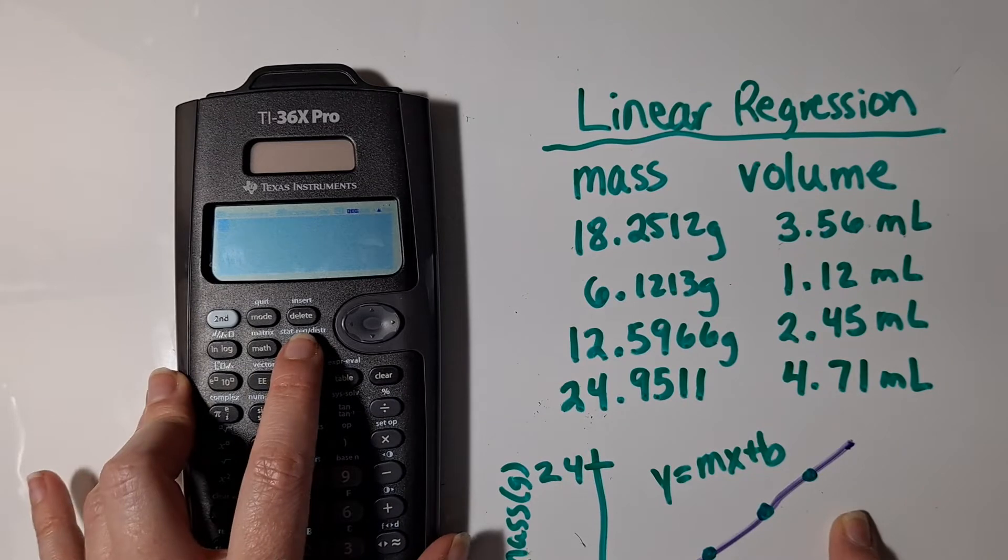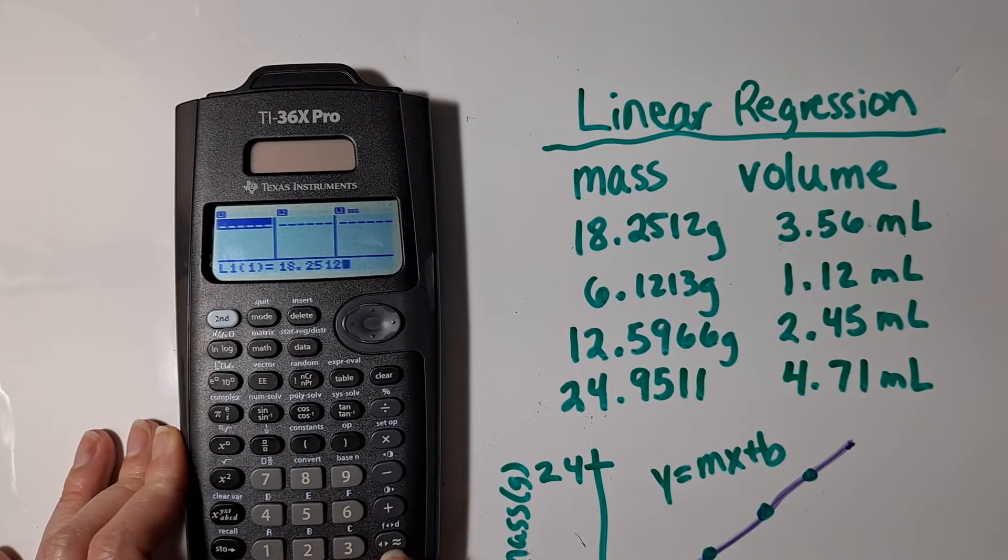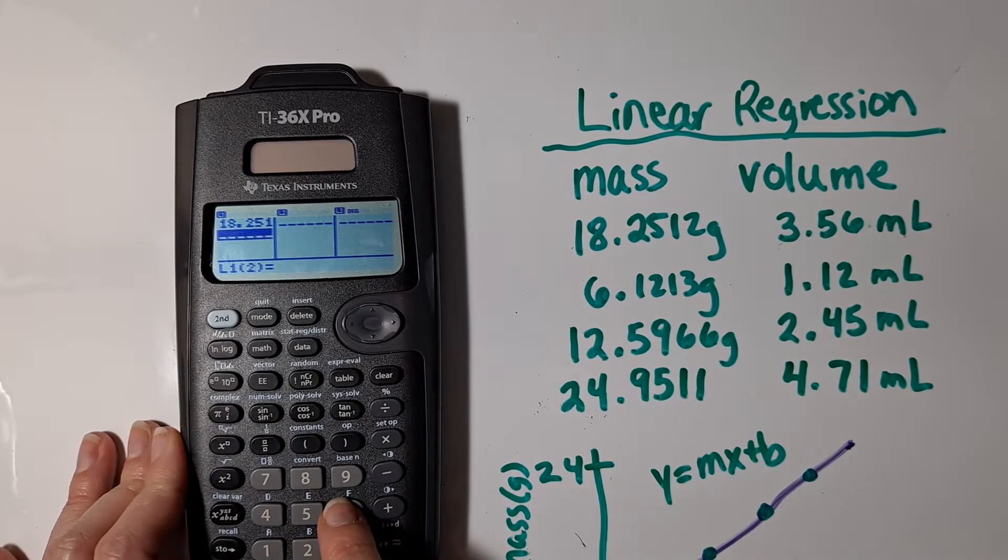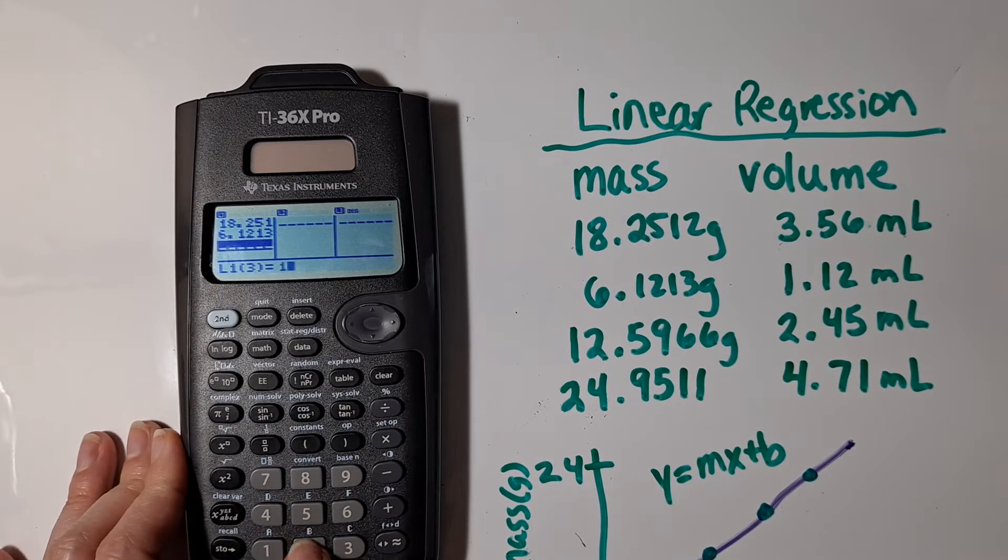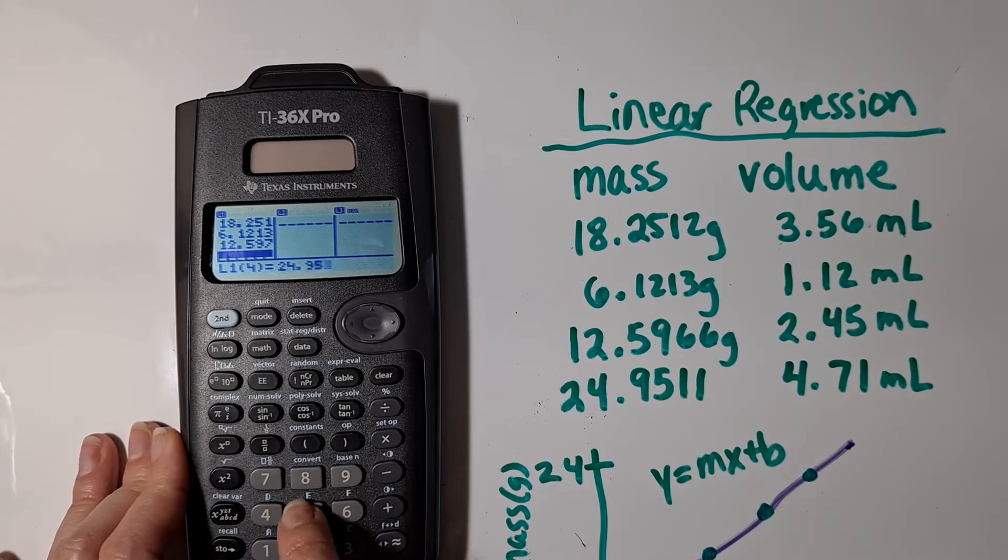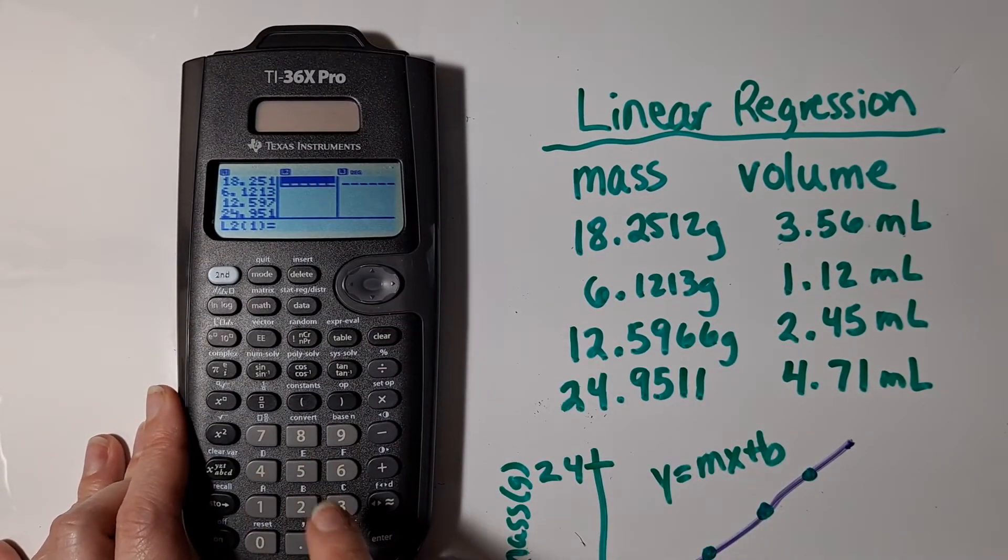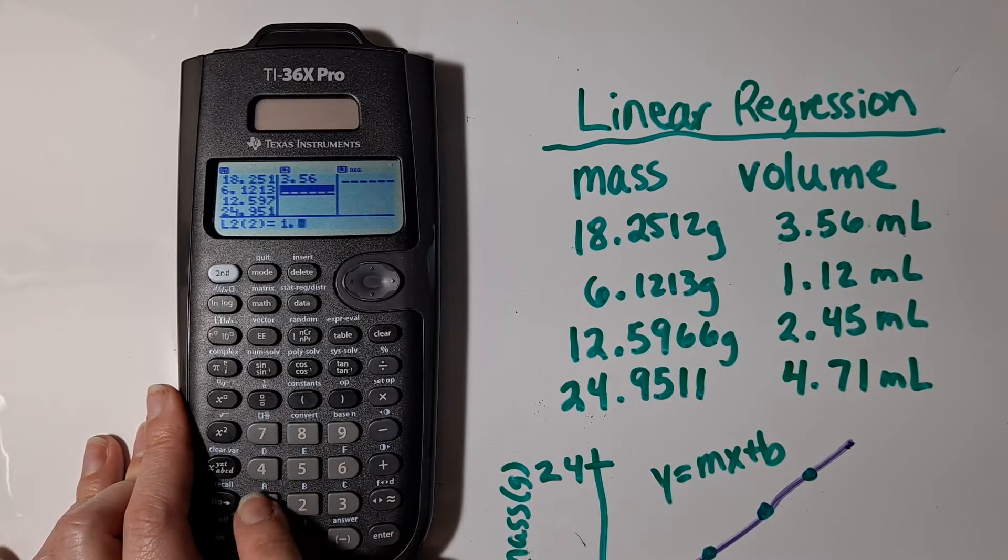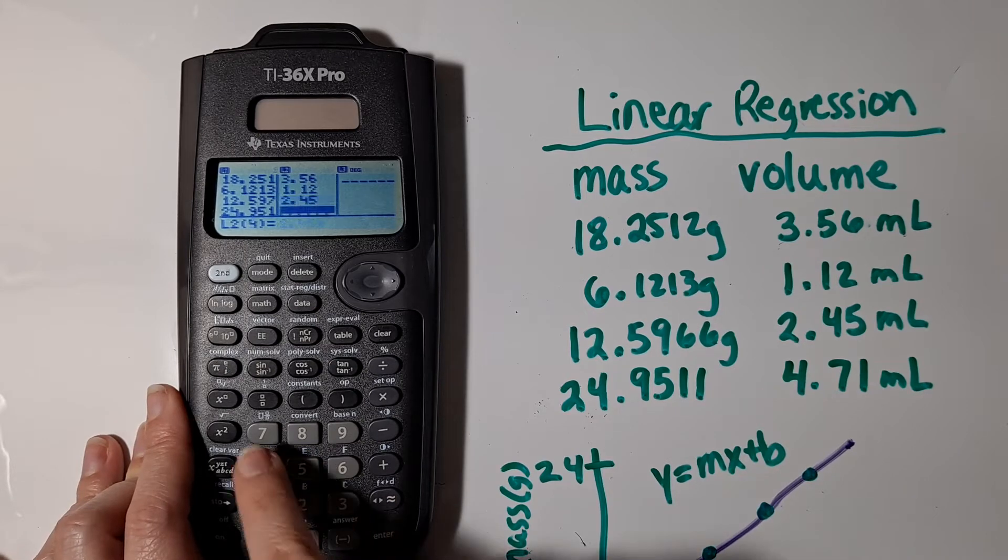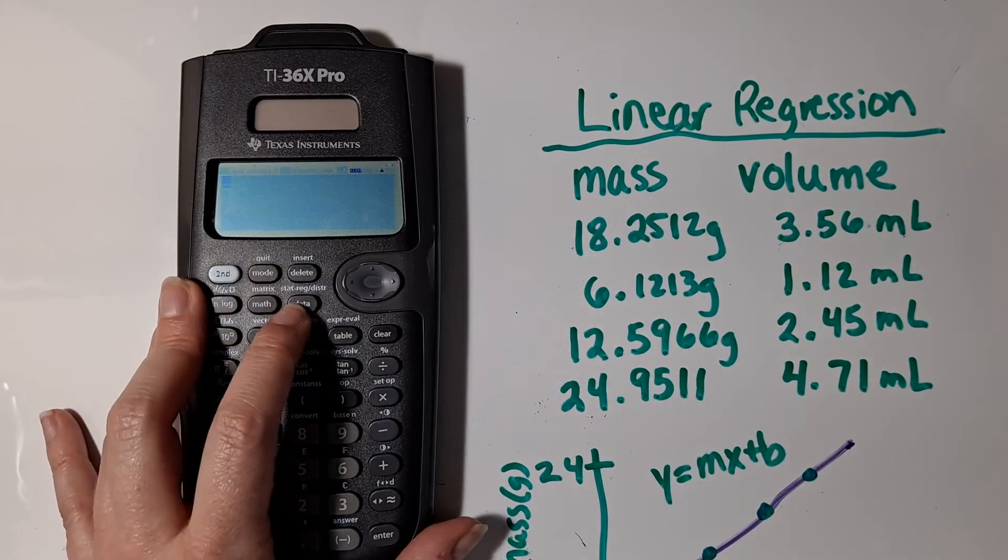The first thing I need to do is go to the data tab and type in my data. And so I'm going to type in my masses into the first list. And then I'm going to scroll over and then type in my volumes into the second list. Now I got my data typed in and quit this menu.